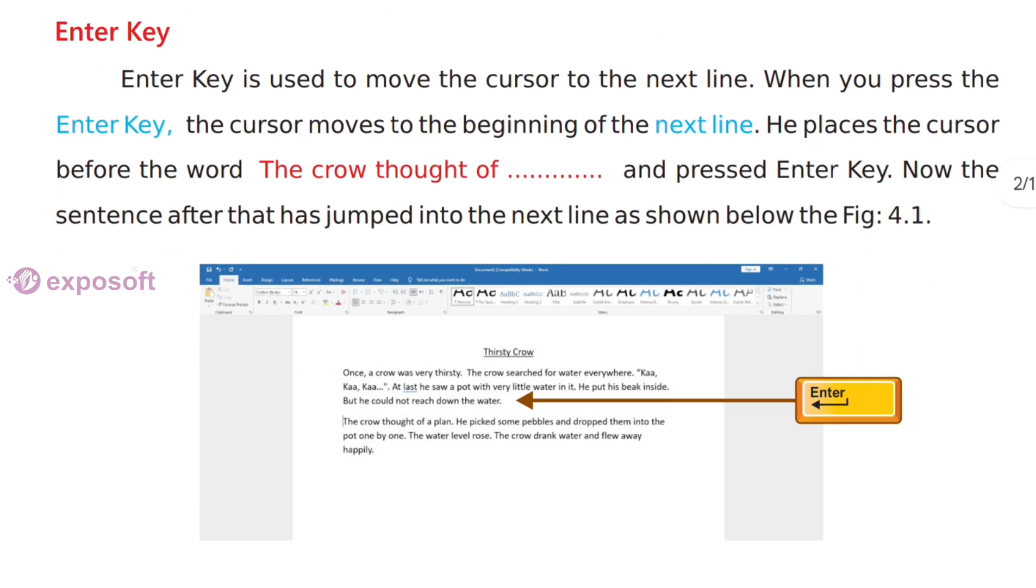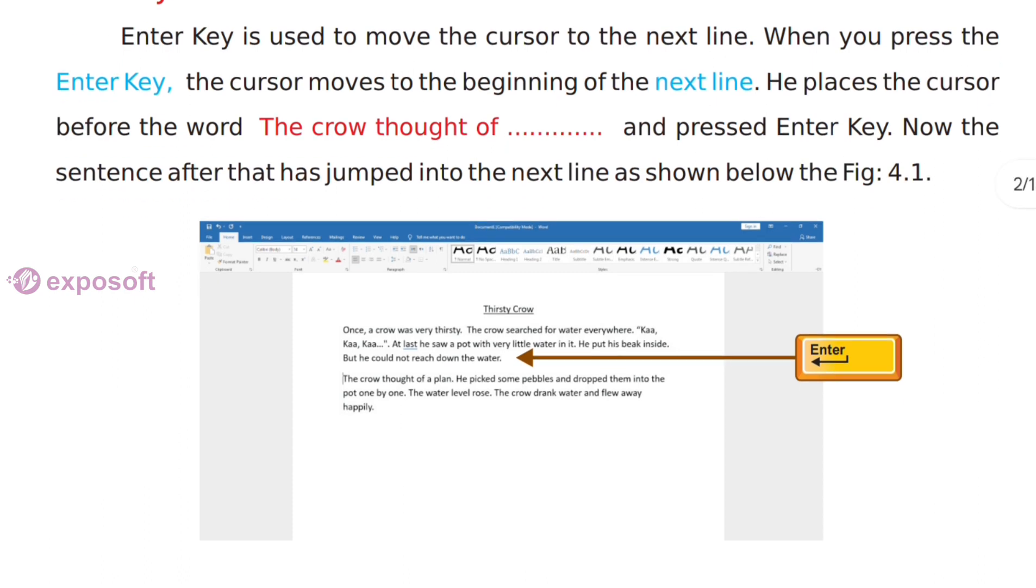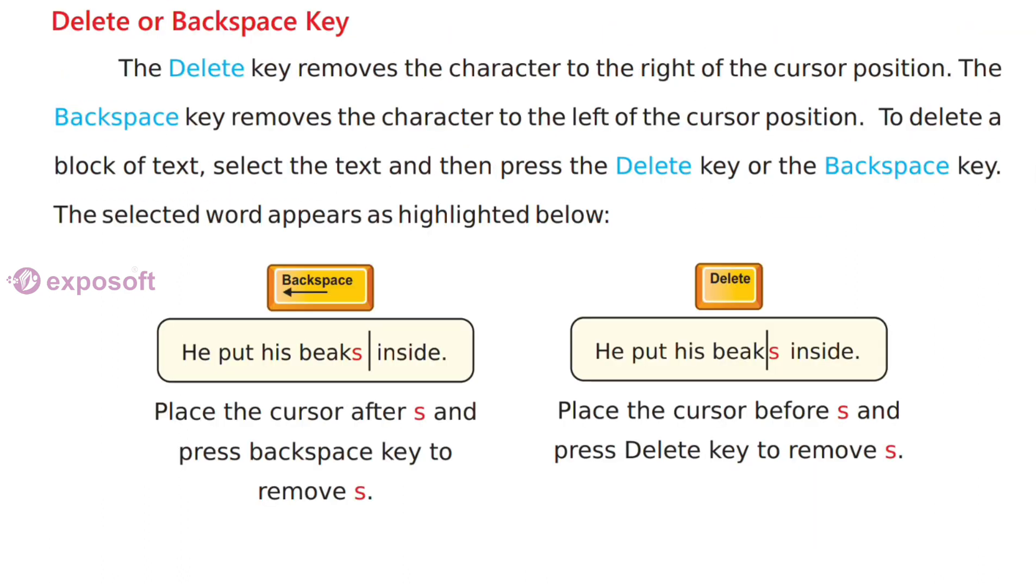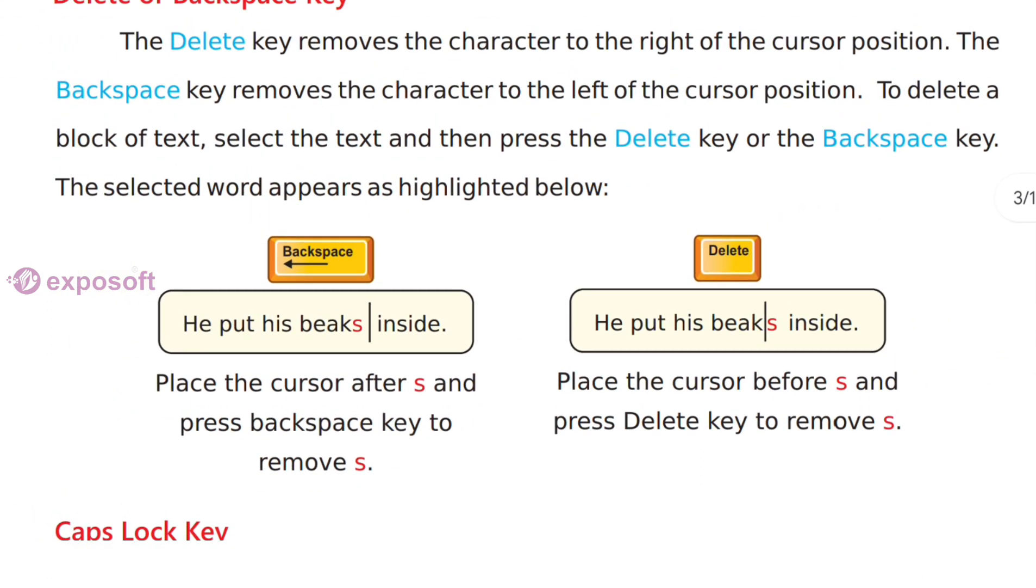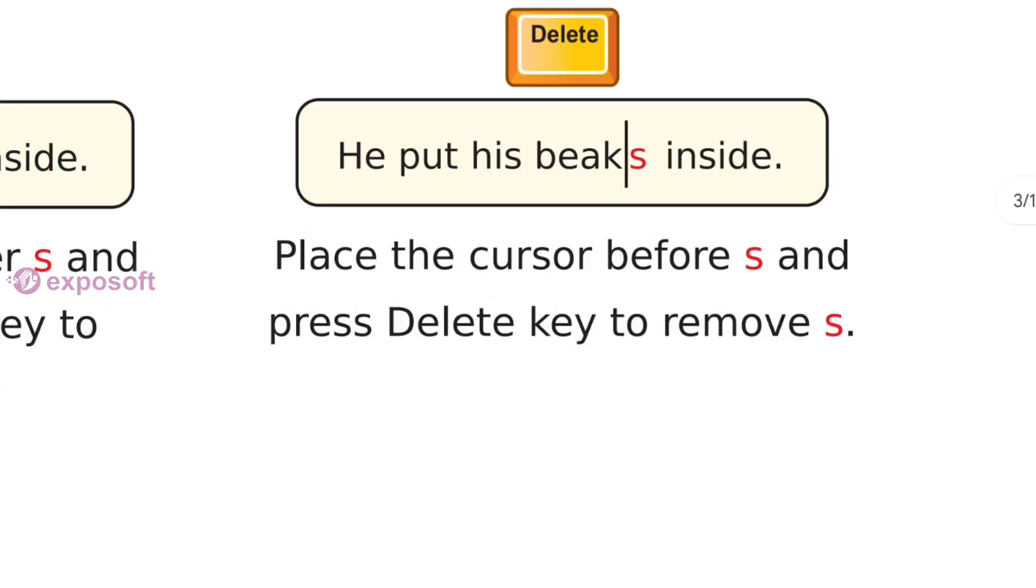First, let's move on to commonly used keys on the keyboard for editing. Enter key is used to move the cursor to the next line. Delete or backspace key: the delete key removes the character to the right of the cursor position. The backspace key removes the character to the left of cursor position.